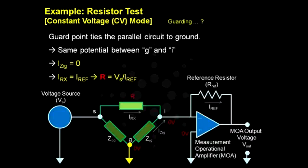So if both point G and I are ground, there will be no potential difference between the two points and therefore no current I-Zig. This method to tie a point within the circuit on the board temporarily to ground is called guarding. The temporarily ground point is called the guard point.